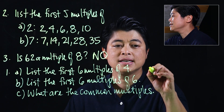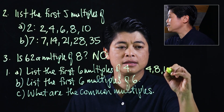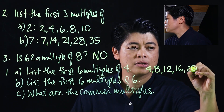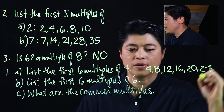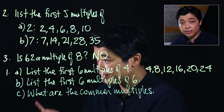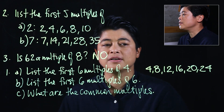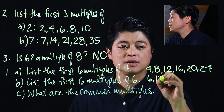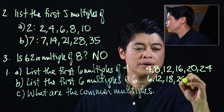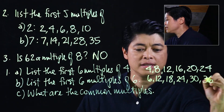From page 46, it says: list the first six multiples of four. Those would be 4, 8, 12, 16, 20, and 24. The first six multiples of six will be 6, 12, 18, 24, 30, and 36.